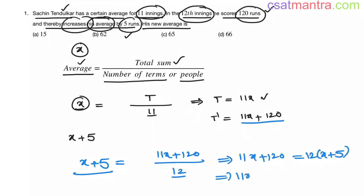Now this is 11x plus 120. This equals 12x plus 60. Now x equals 12x minus 11x. x equals 120 minus 60, this is 60. x equals 60.